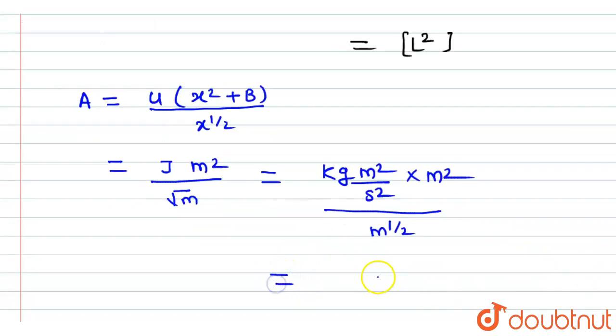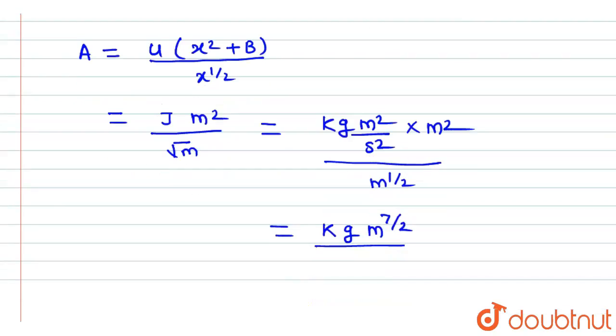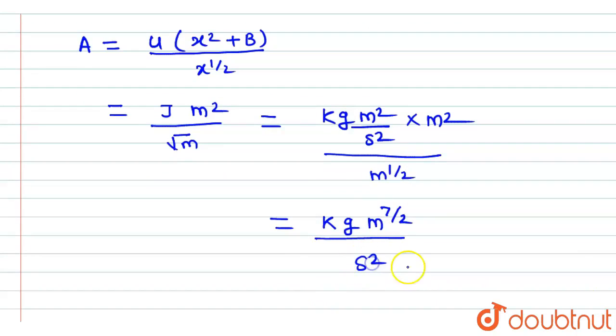So here on solving this, we get the dimensions of A, as kg, or the unit of A as kg, into meter to the power 7 by 2 divided by second square. So here the dimensions will be M1 L to the power 7 by 2 into T to the power minus 2.